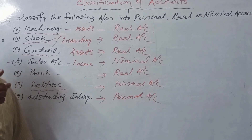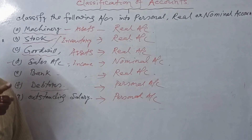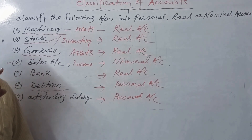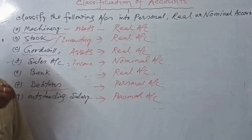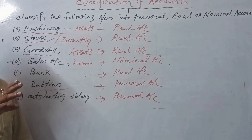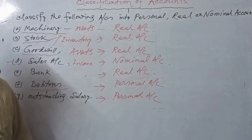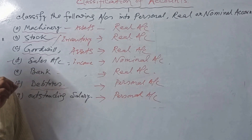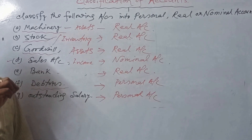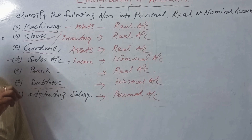Nominal accounts cover all accounts except personal and real accounts. Nominal accounts represent expenses, losses, income — such as wages, rent, salary, insurance, bad debt. Golden rules: all expenses and losses are debited; all income and gains are credited. Next class we will discuss the journal. Thank you.